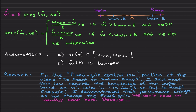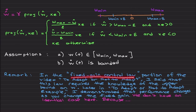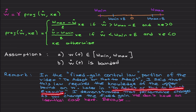This assumption is needed for technical details in the stability proof but not necessarily for implementation. Before moving forward, I want to mention a remark. If you watched one of the earlier videos in this series — the 'To Adapt or Not to Adapt' video — I mentioned that fixed-gain robust control laws require knowledge of the upper bound on the uncertainty w.